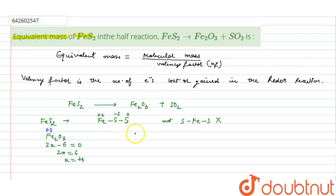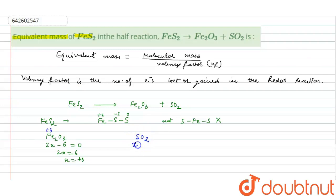Now we will see the oxidation state of sulfur in SO₂, as we have to find the equivalent mass of FeS₂ and need the oxidation state changes in both Fe and sulfur. Let the oxidation state of sulfur be x; for one oxygen atom it is minus two, so for two it will be minus four. Therefore x minus four equals zero, so x is plus four.